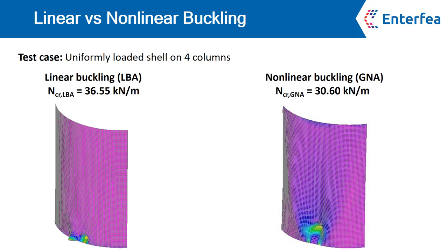Comparing both analyses: linear buckling produced a critical force of 36.55 kN per meter, while non-linear buckling produced 30.6 kN per meter — roughly a 16% difference. It is commonly believed that linear buckling overestimates capacity by around 15% in all cases. While this is true in many cases, there are situations where linear buckling can overpredict capacity by a higher margin, so always be aware that linear buckling may overestimate the model's capacity.